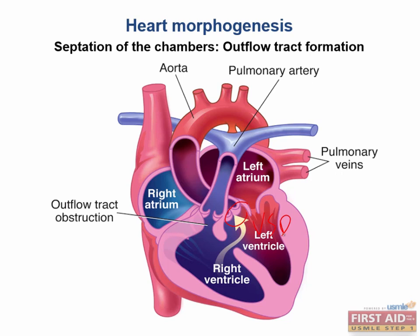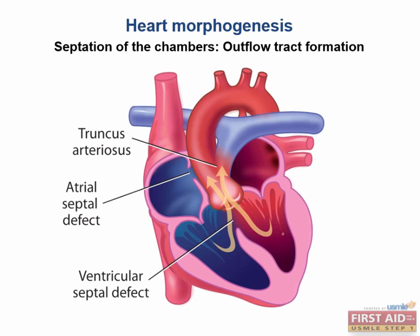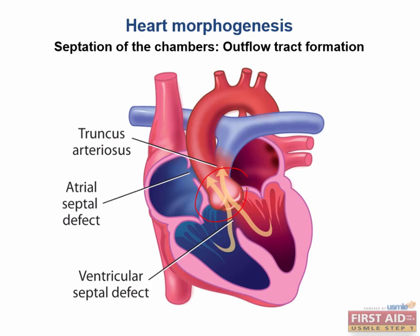The third thing that can go wrong is complete failure of the aorticopulmonary septum to form within the truncus arteriosus. This creates a persistent truncus arteriosus — one large truncus arteriosus with no septum formed to separate the two vessels — and we are left with one main trunk draining both the right and the left ventricles into one common trunk.